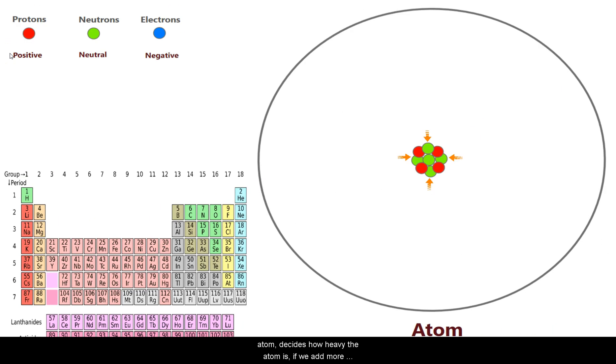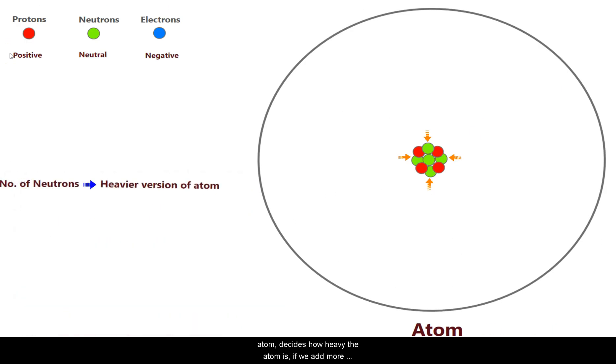In the similar way, the number of neutrons in an atom decides how heavy the atom is. If we add more neutrons then the atom will be more heavier. The heavier version of an atom is called isotopes. For example, hydrogen has three known isotopes. They are protium, deuterium and tritium.